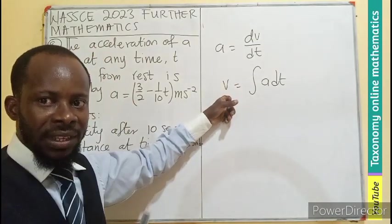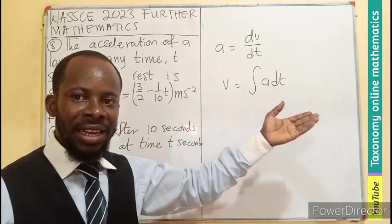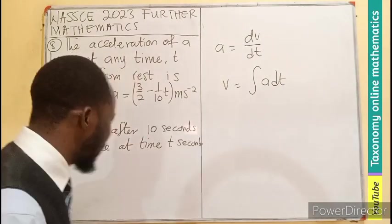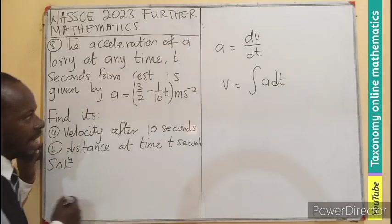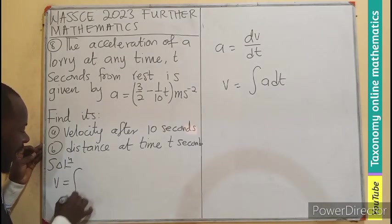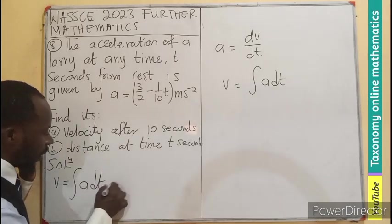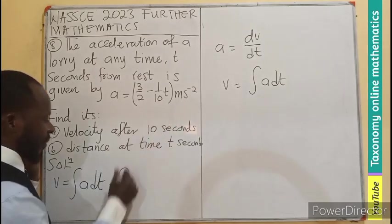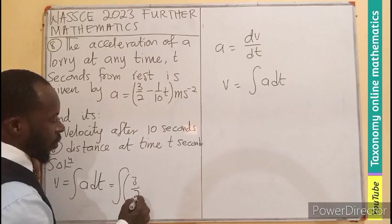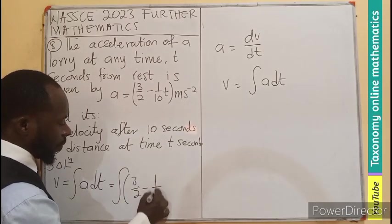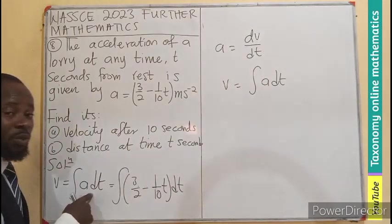In this case, I need velocity and I have acceleration. Simply put, I only find the integral of the acceleration. So what do we do? We can say that if I want to find velocity, it will be the integral of acceleration with respect to t, which is the same as the integral of 3 over 2 minus 1 over 10 t dt with respect to time.